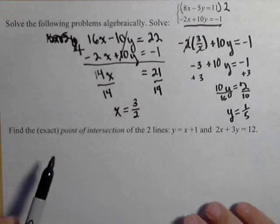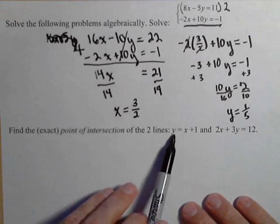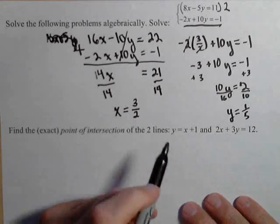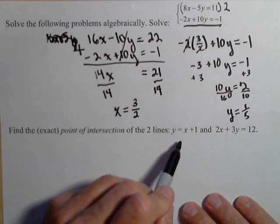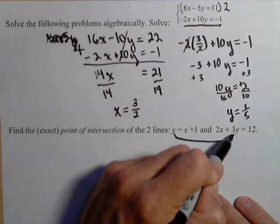Now we're going to do this again using substitution with a slightly different example. Y equals x plus one is one of our lines. The other is 2x plus 3y equals 12. Now this is already solved for a variable. If it wasn't, we would take one of our equations and solve it for a variable.